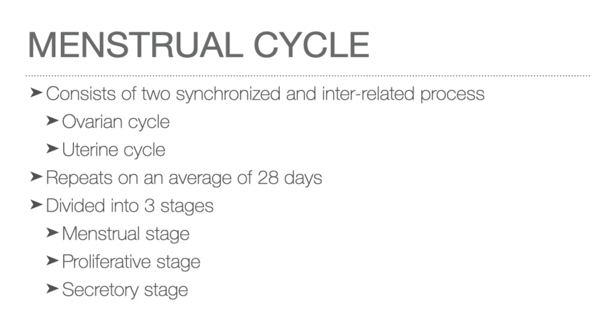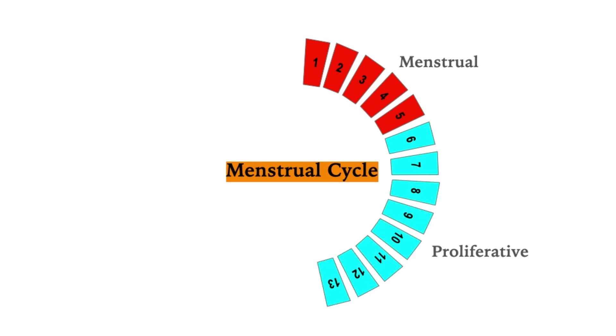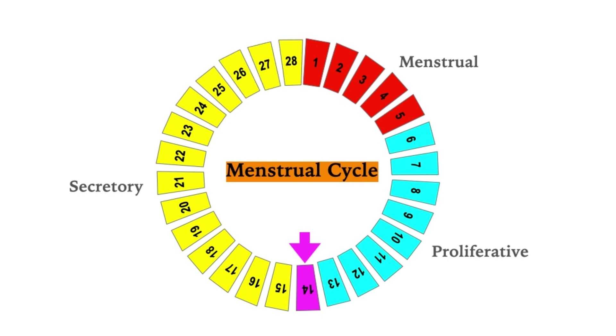The cycle is divided into three stages: menstrual, proliferative, and secretory. A menstrual cycle starts with the first day of menstruation and ends with the start of the next menstrual period. The menstrual stage usually lasts five days. The proliferative stage runs from day 6 to day 13 on a 28-day cycle. Day 14 is when ovulation occurs. The secretory phase follows from day 16 to day 28, after which the next cycle begins if the oocyte is not fertilized.